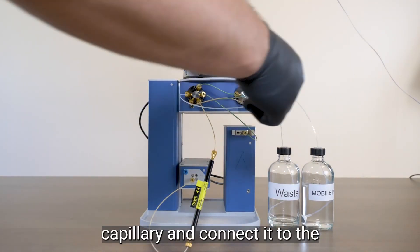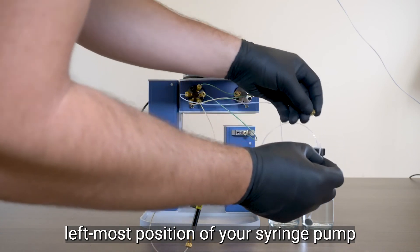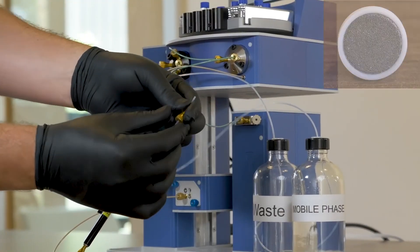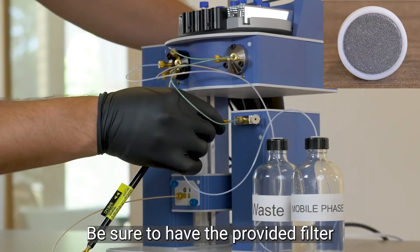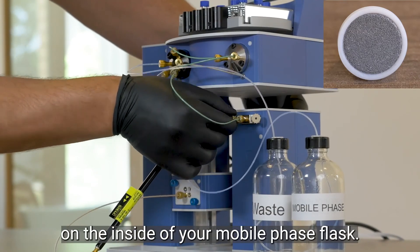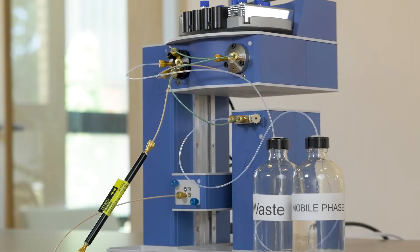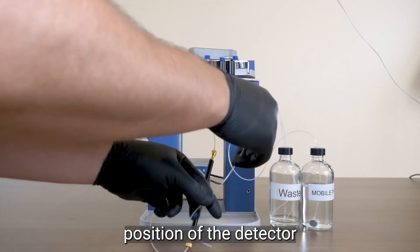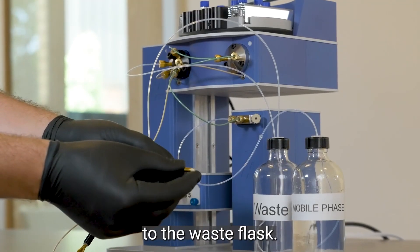Now, take a clear capillary and connect it to the left-most position of your syringe pump, with the other end going to your mobile phase. Be sure to have the provided filter connected to the clear tubing on the inside of your mobile phase flask. Lastly, take a clear capillary and connect it from the out position of the detector to the waste flask.